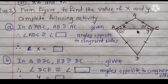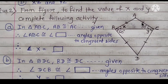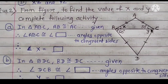This is the first part. In triangle ABC, AB is congruent to AC (given). Therefore, angle ABC is congruent to angle ACB — angles opposite to congruent sides. The opposite angle is 50 degrees, and the angle of X is also opposite. Therefore, X is equal to 50 degrees.